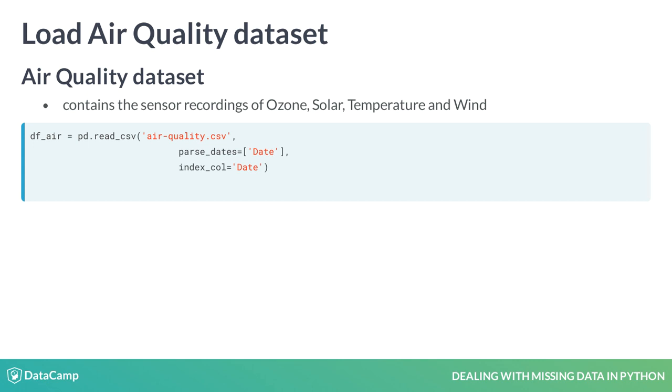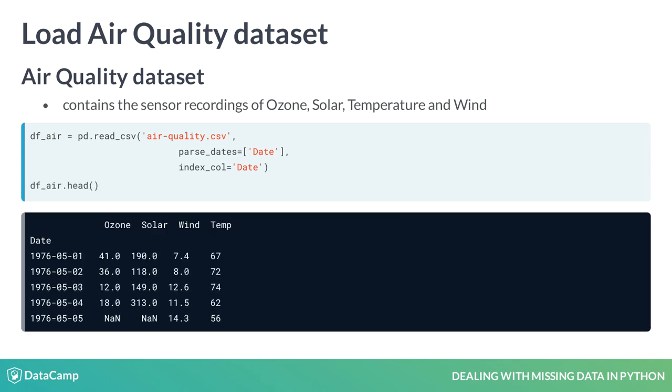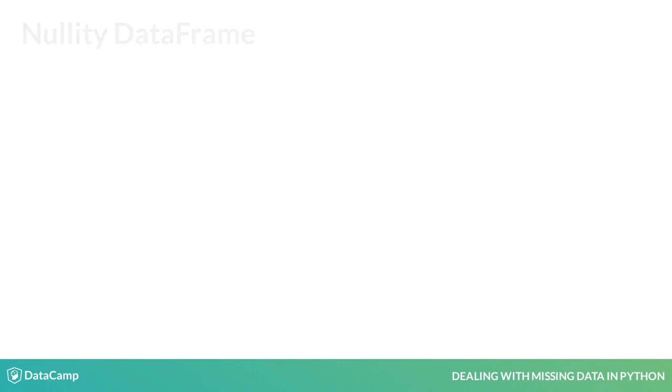Printing the head of the dataset shows that there are a few null values, so let's now analyze the missingness in the dataset.